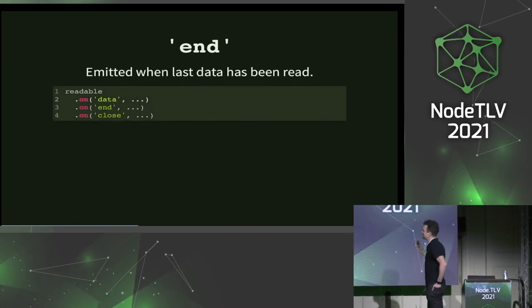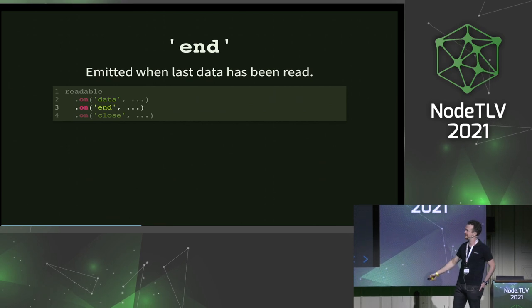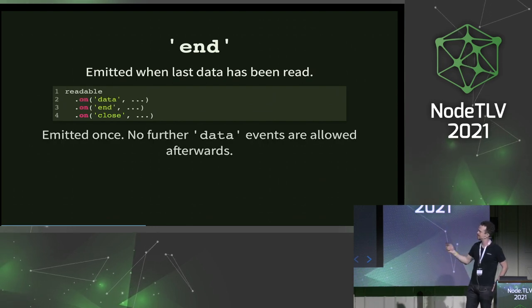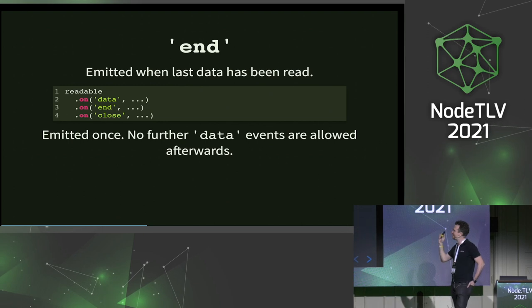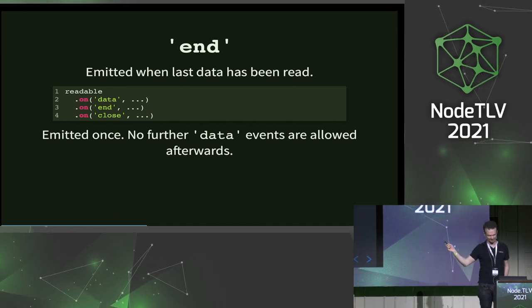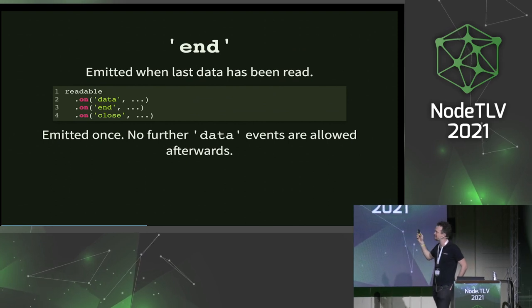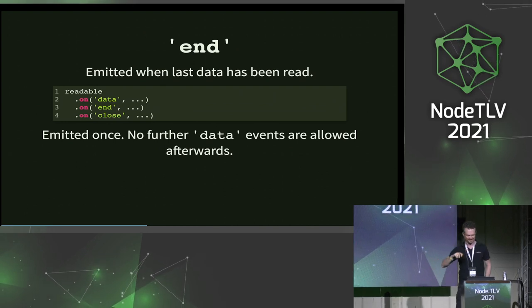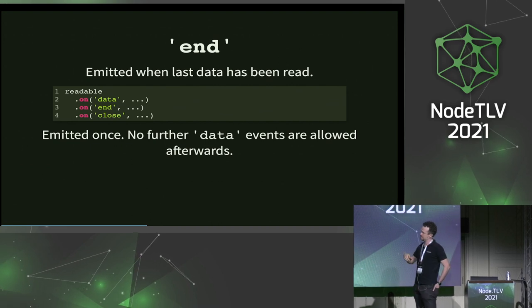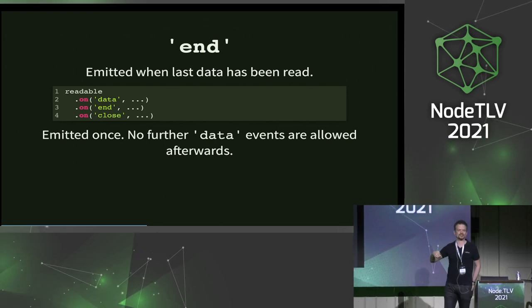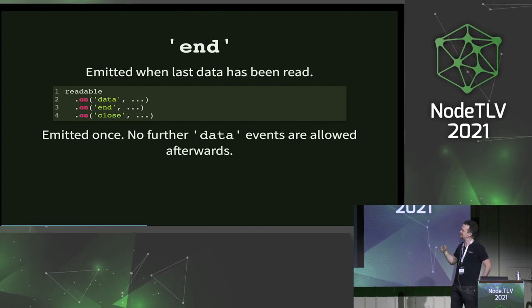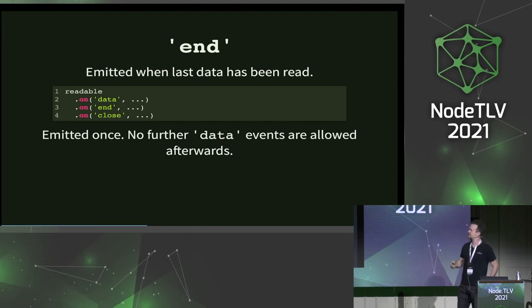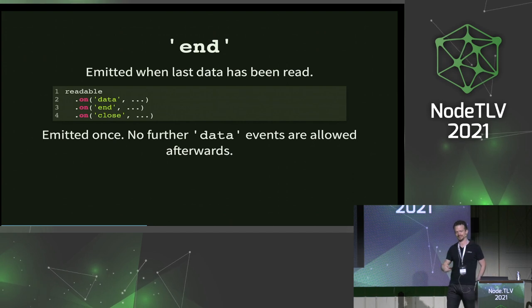End is emitted when the last data is read. You're reading a lot of data, end gets emitted, and if you're lucky there are no errors and then close gets emitted. It's emitted only once and no data events are allowed afterwards. You might not believe this, but we've had streams that continued emitting data even after end. So again, it's a reasonable assumption that after end there's no more data coming — but in those edge cases, you would be wrong. That's what we've spent a lot of work on: getting this consistency and predictability.